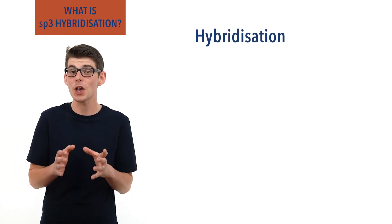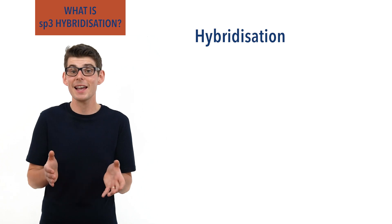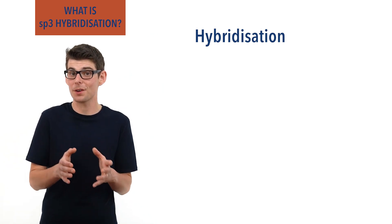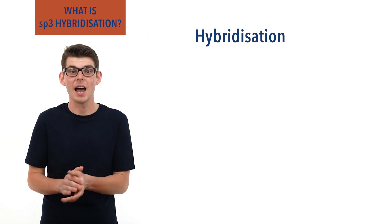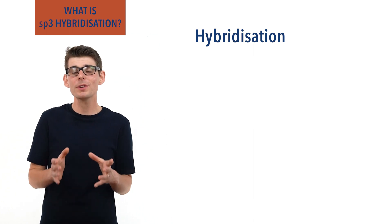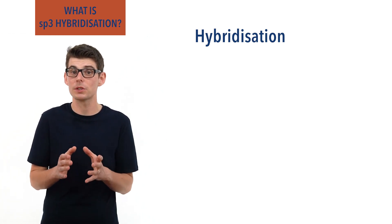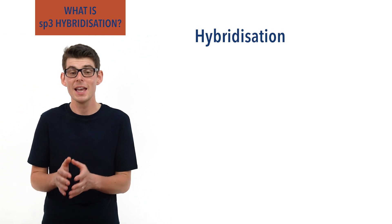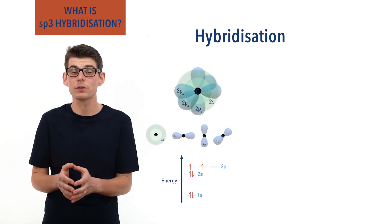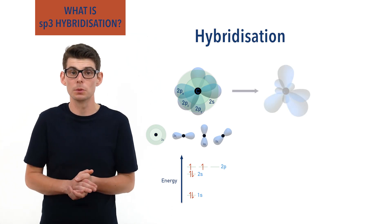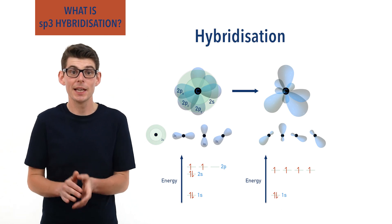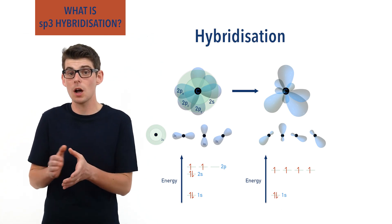Hybridization doesn't only occur for carbon — it's actually a mathematical idea. But as this video is about carbon, carbon hybridization will be the focus and we will leave out the advanced mathematics. Hybridization describes how, as an atom of carbon starts to bond to other atoms, its outer atomic orbitals rearrange and mix themselves to form new identically shaped orbitals, all with the same energy and each with one electron from the carbon.